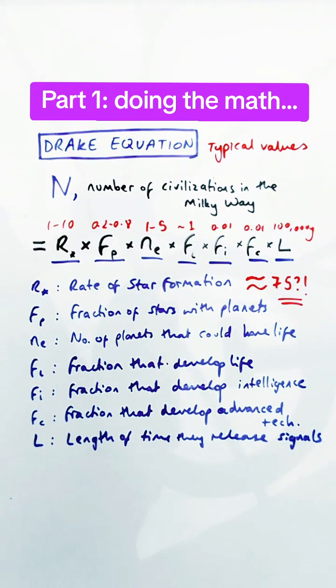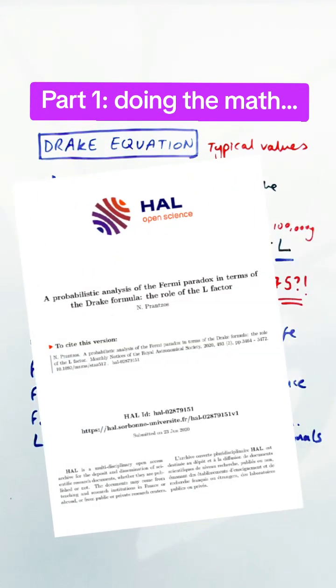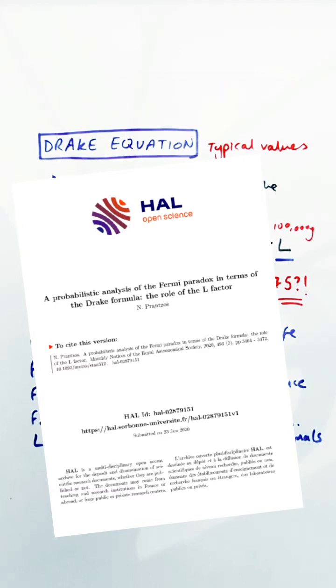Frank Drake himself predicted about 10,000 when he did this equation in the 1960s and a recent study in 2020 estimated it to be closer to 36.